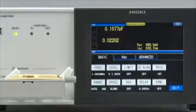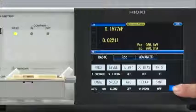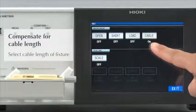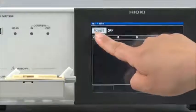Now, let's make open and short compensations. Select the cable length that matches the specifications of the test fixture. First, conduct open compensation.